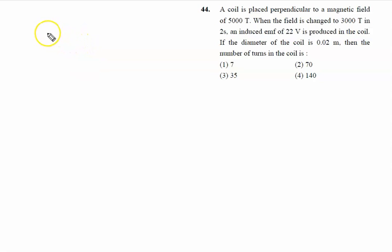A coil is placed perpendicular to a magnetic field of 5000 Tesla. This is a coil placed perpendicular to the magnetic field. When the field is changed to 3000 Tesla, B₁ is 5000 Tesla and B₂ is 3000 Tesla.